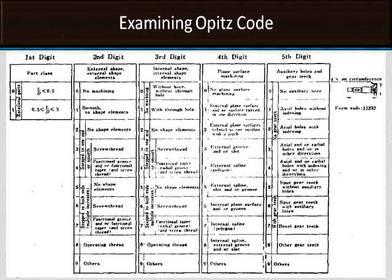The fifth digit describes auxiliary holes or gear teeth on the external shape. No auxiliary holes — use 0. Axial holes — use 1. Axial holes with indexing (e.g., 6 or 12 holes) — use 2. The digits 3, 4, 5 are self-explanatory as given in the figure. The digits 1 through 5 in the OPEC form code describe the rotational part and its external and internal characteristics.